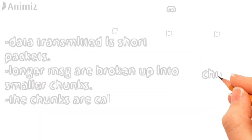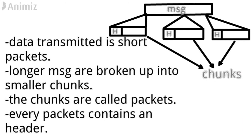If you have any data, you can transmit it with a short packet. For example, if there is a large message, you break it into chunks. If you have any chunk, you flow it as a packet. You can show it with some packets. Each packet has a header. The header contains the path information. Every packet contains a header, so one message is broken into many packets each with a header.